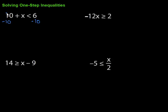Then we simplify. The 10s are gone because we did the opposite there, and what's left? We've got an x, so we have x is less than, and we have 6 minus 10, well, that would be negative 4. So x is less than negative 4.